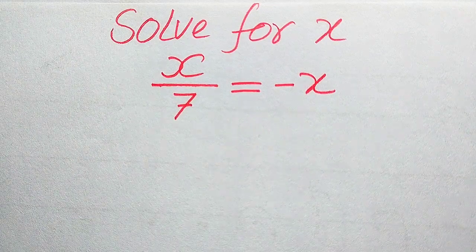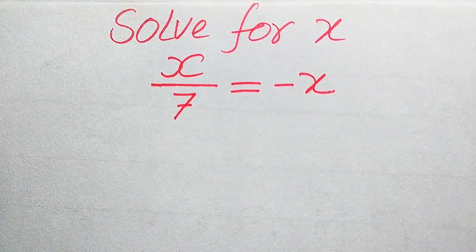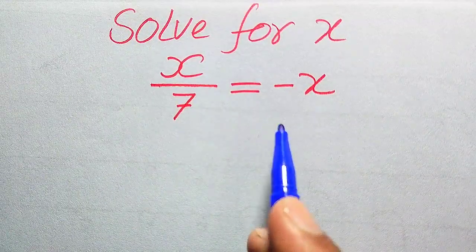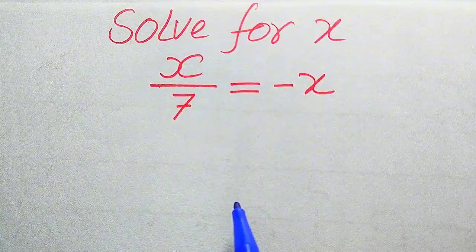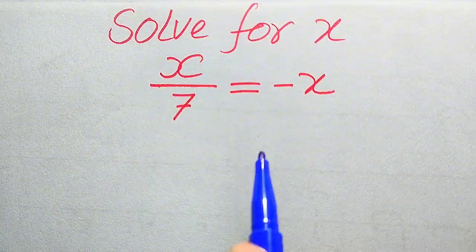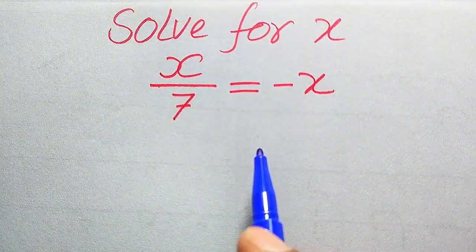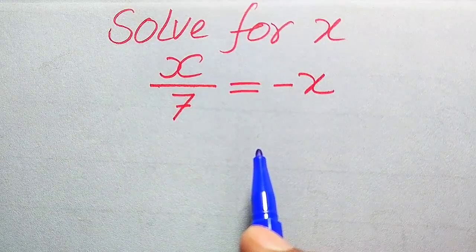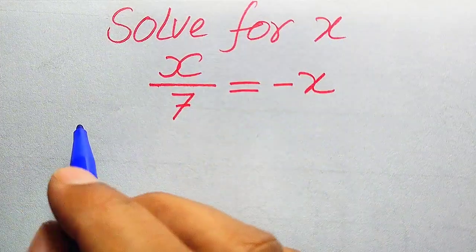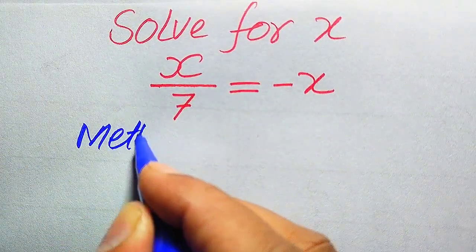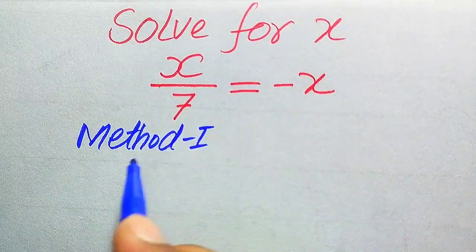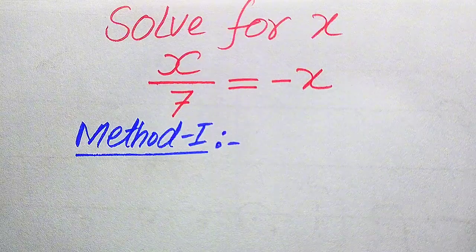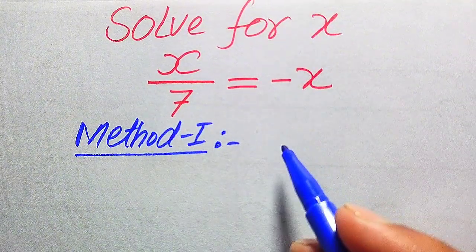Hello everyone. How to solve this problem for the values of x if we have x divided by 7 equals minus x? We solve this problem for all the values of x. First we need to find all the roots of this equation, and at the end we will verify which roots are solutions and which are extraneous. We will solve this using two methods.